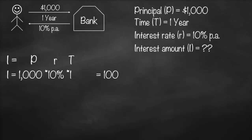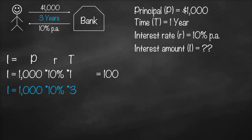Let me give you another scenario. What if Mark is going to deposit this one thousand dollars but for three years instead of one year? What will be our new interest amount? Substituting the same formula, the interest amount is equal to a principle of a thousand dollars multiplied by a simple interest rate of 10 percent multiplied by our new time of three years, and this will give us three hundred dollars.